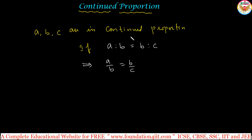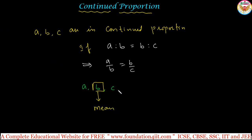If A, B, C are in continued proportion, the first two quantity ratio A is to B should equal B is to C. The second quantity B is called the mean proportion between them. So in A, B, C if they are in continued proportion, B is called the mean proportion.